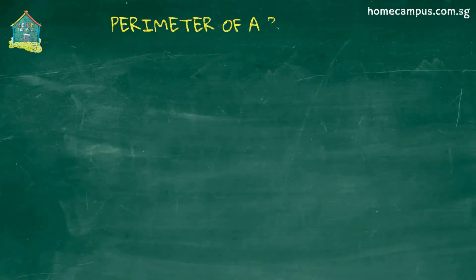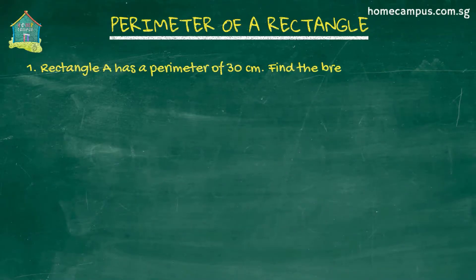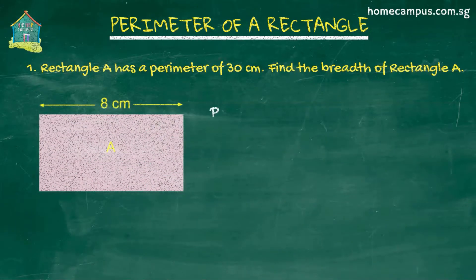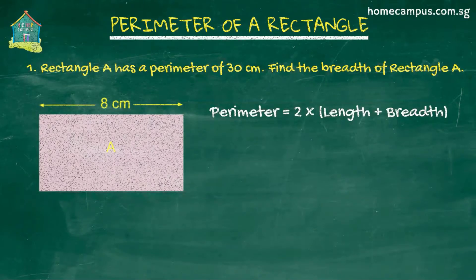Here is our first problem. Rectangle A has a perimeter of 30 centimeters. Find the breadth of rectangle A. Let's recall from a previous tutorial that the perimeter of a rectangle is two times the sum of its length and breadth. Click the link above if you need to refresh your memory.